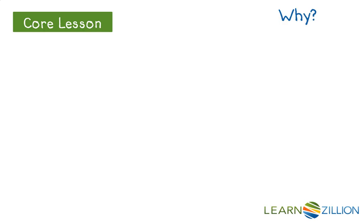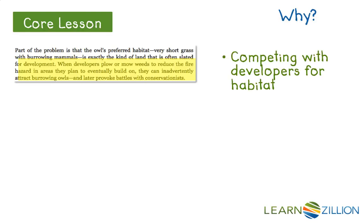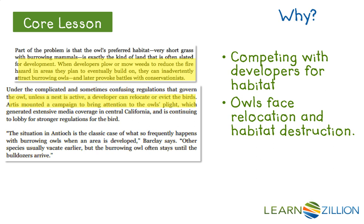Finally, why? Why is this a problem? Why does it matter? Part of the problem is that the owl's preferred habitat — very short grasses with burrowing mammals — is exactly the kind of land often slated for development. When developers plow or mow weeds to reduce fire hazard in areas they plan to eventually build on, they can inadvertently attract burrowing owls and later provoke battles with conservationists. Why is this a problem? Because they're competing with developers for habitat. Under complicated and sometimes confusing regulations that govern the owl, unless the nest is active, a developer can relocate or evict the birds. Artis, a local resident, mounted a campaign to bring attention to the owl's plight. So they're facing relocation and habitat destruction because the law is unclear, which has led to them being imperiled.